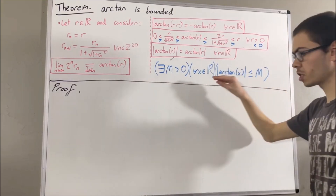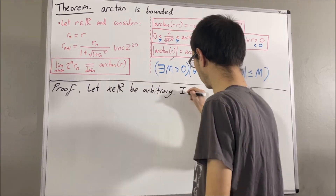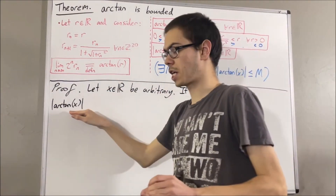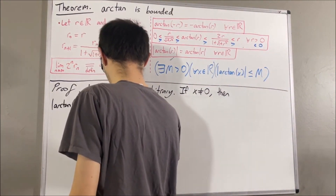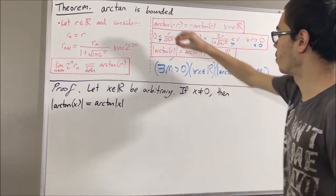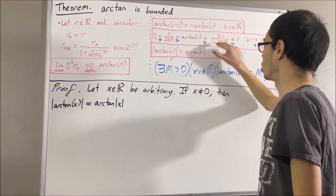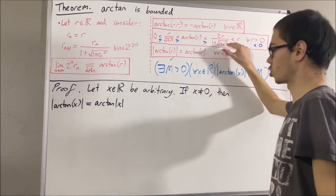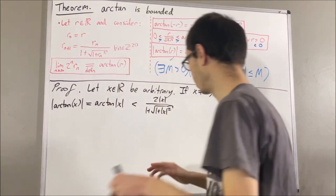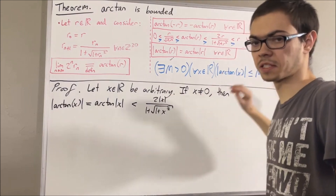So to prove this, let's first consider an arbitrary real number x. We're first going to consider the case where x is not equal to 0. We know from this fact that the arctangent of arctangent of x equals the arctangent of arctangent of arctangent of arctangent of x. And since x is not equal to 0, the absolute value of x is greater than 0. Applying this fact, we have the arctangent expression, and now we're going to bound this above by some fixed positive constant.